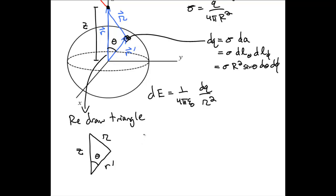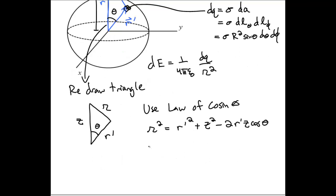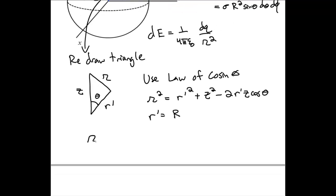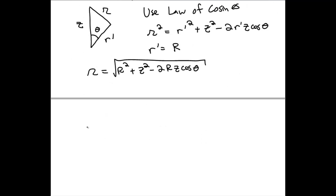Then we can use the law of cosines to figure out the magnitude of r. And we know that the length r prime must be equal to the radius of the sphere, and so we can rewrite this for curly r as follows. So now we have an expression for the little bit of the electric field due to the little bit of charge at point z.